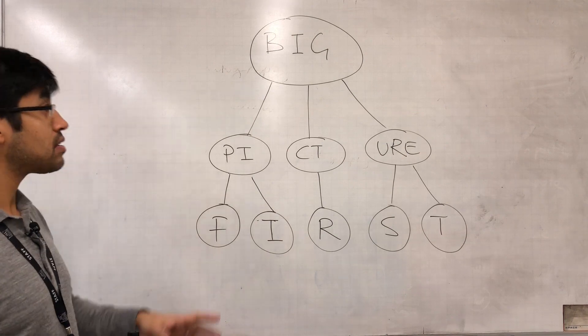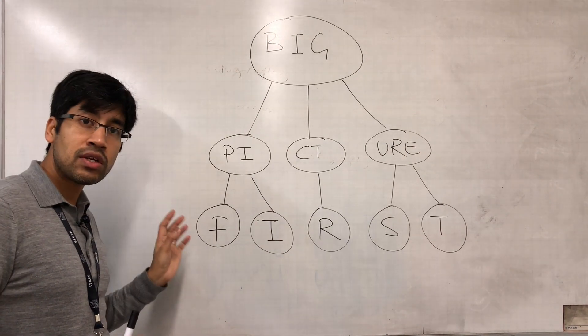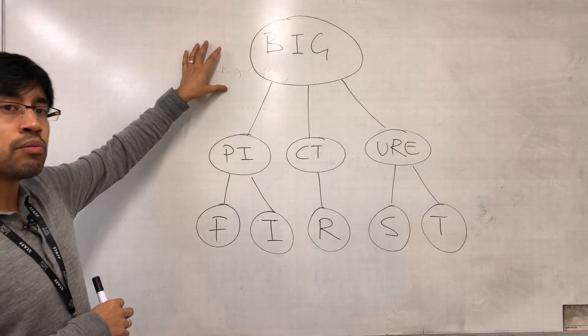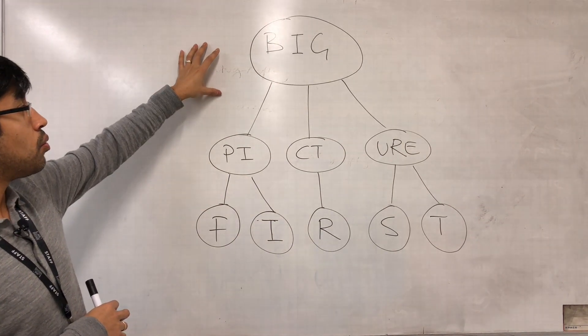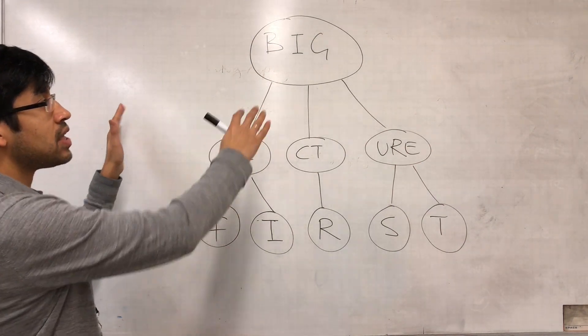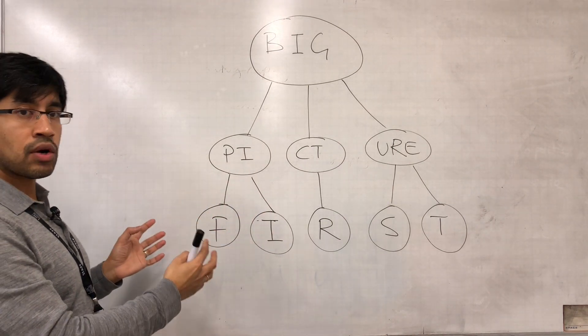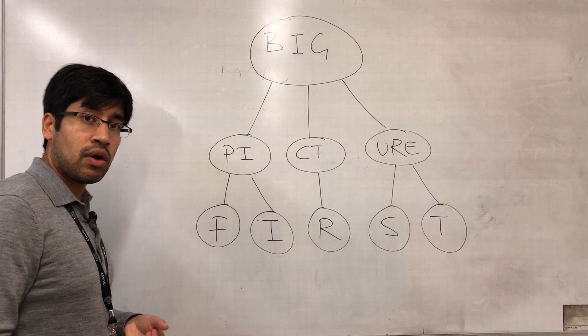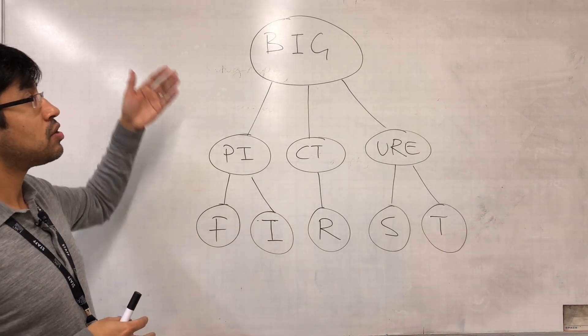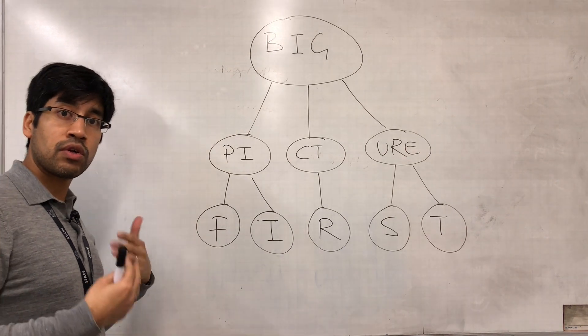One way you're going to address this is by organizing your information during the note-making process. As early as that, you're going to be more effective at organizing your information so that it's arranged in levels of detail. Then, according to the number of marks or the type of question being asked, you can choose the most relevant level of detail.